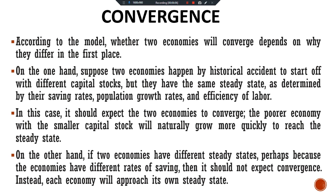An example can be found in the economies of individual American states. For historical reasons, such as the Civil War of the 1860s, income levels varied greatly among states at the end of the 19th century. Yet these differences have slowly disappeared over time. In international data, a more complex picture emerges. When researchers examine only data on income per person, they find little evidence of convergence — countries that start off poor do not grow faster on average than countries that start off rich.